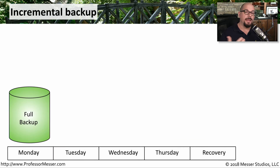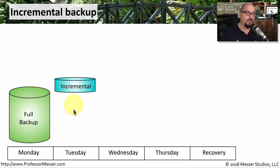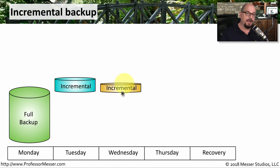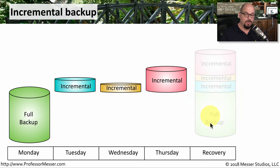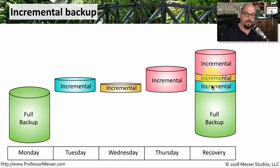Here's how this works with an incremental backup. On Monday, for example, we'll perform a full backup — we'll back up every file from the file system and clear all of the archive bits. On Tuesday, we'll perform an incremental backup, which will only back up the files that have changed since the last full backup. On Wednesday, we'll back up all of the files that have changed since Tuesday's backup. And on Thursday, we'll back up all of the files that may have changed since Wednesday's backup. This means if we need to perform a full recovery of this system, we will need the full backup from Monday and the incremental backups from Tuesday, Wednesday, and Thursday.